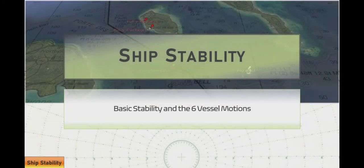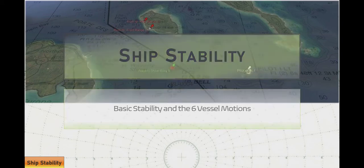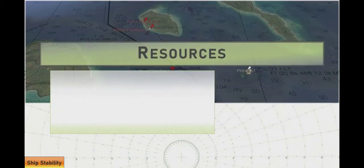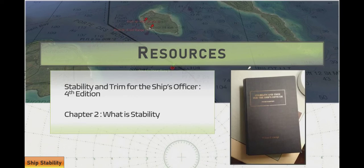This video is going to take a quick look at ship stability, a little introduction that includes the components that make up stability and the six vessel motions. This is material that you're likely to see on U.S. Coast Guard exams. The material is going to follow along with Stability and Trim for the Ship's Officer, Chapter 2.